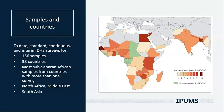Now let's get into the heart of our topic: Harmonized Geography in IPUMS DHS. To date, we have standard, continuous, and interim DHS surveys — 456 samples covering 38 countries. This is nearly all of sub-Saharan Africa, as well as North Africa, the Middle East, and South Asia. Senegal has the most samples with 10; Bangladesh and Egypt are in second place with seven each. Today we'll be focusing on Tanzania, which has six surveys, offering a lot of opportunity for studying change over time.